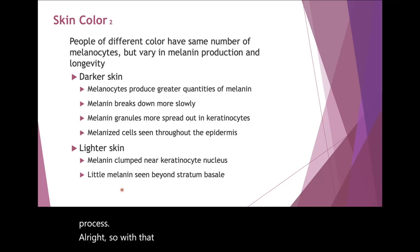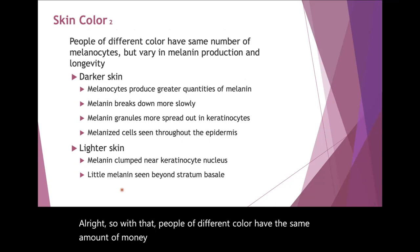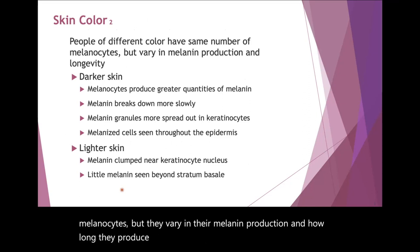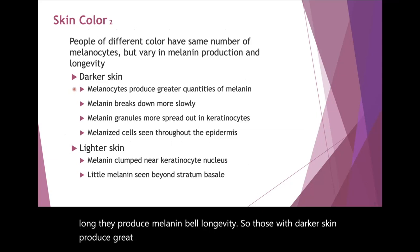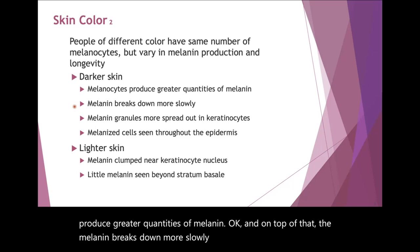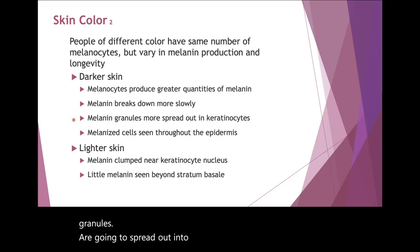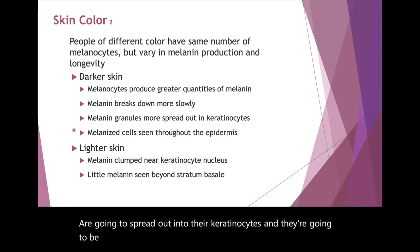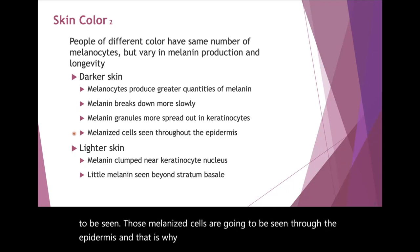People of different color have the same amount of melanocytes, but they vary in their melanin production and how long they produce melanin — that longevity. Those with darker skin produce greater quantities of melanin, and on top of that, the melanin breaks down more slowly. Those melanin granules spread out into their keratinocytes and are seen through the epidermis, which is why you see that darker skin color.